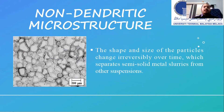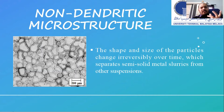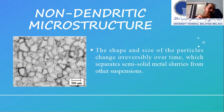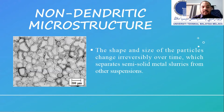We want the non-dendritic microstructure because it positively affects the product. This is the non-dendritic microstructure — the shape and size of the particles change over time, which separates semi-solid metal slurries from other suspensions. If you look at the grain size, it is not like a tree; it is a round shape. This is what we want to achieve — an accurate and precise result for the non-dendritic microstructure.